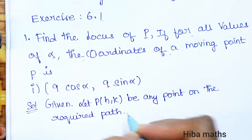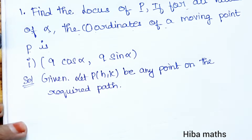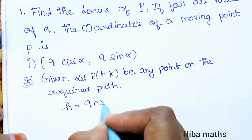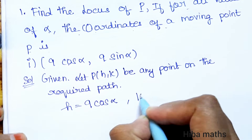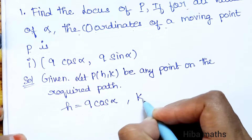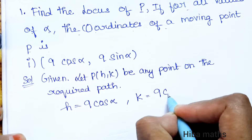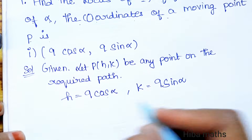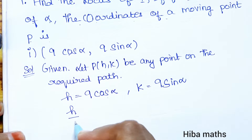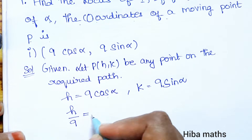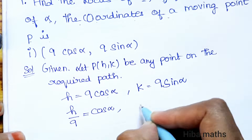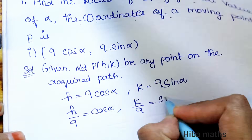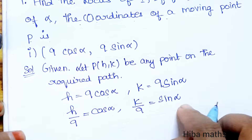Comparing coordinates: H equals 9 cos alpha, and K equals 9 sin alpha. We isolate cos alpha and sin alpha: H divided by 9 equals cos alpha, and K divided by 9 equals sin alpha.